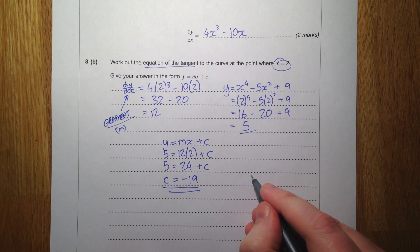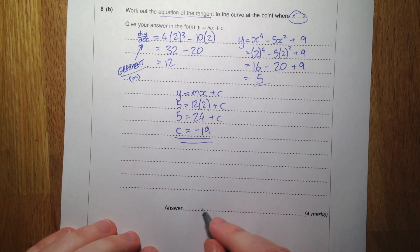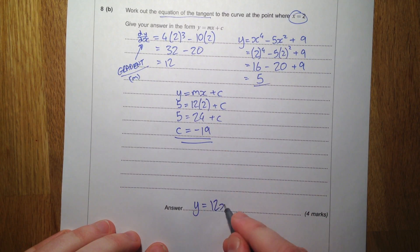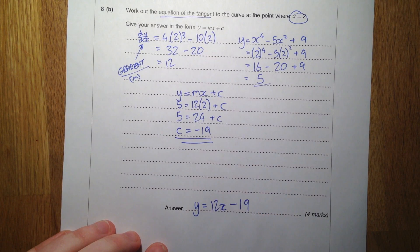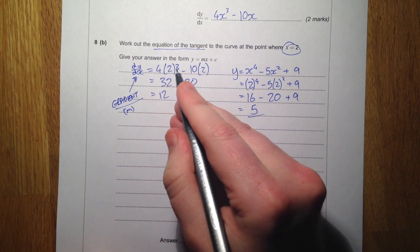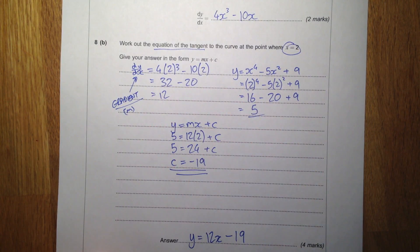So our equation then is y equals our gradient times x plus c, which is take away 19. So that's the equation of our line. Just checking that's the format we want - it does say give your answer in the form y equals mx plus c.